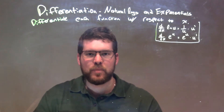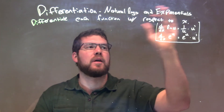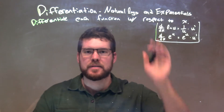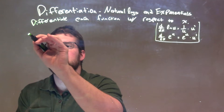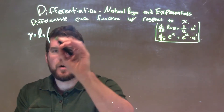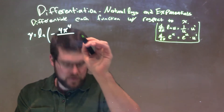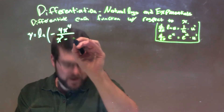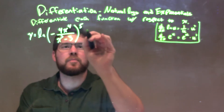Hi, I'm Sean Gannett, and this is MinuteMath. Today we're going to learn about differentiation of natural logs and exponentials — specifically differentiating each function with respect to x. I'm given this function: y equals the natural log of negative 4x to the fourth power over x to the third minus 3, all raised to the fifth power.